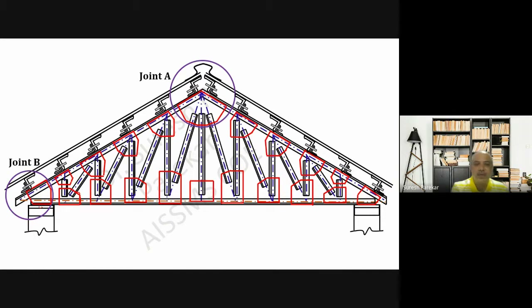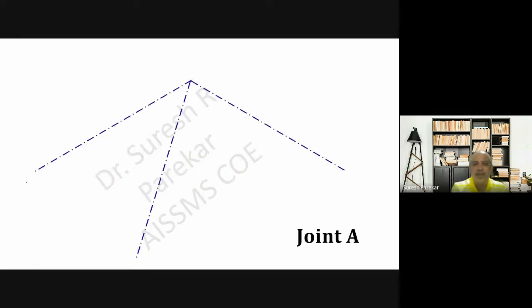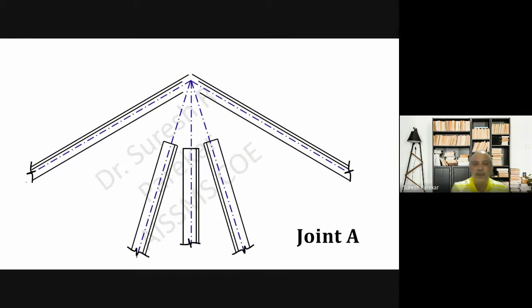Now we have to show Joint A — also called Ridge Joint — then Joint B, which is at the support and called the U-Joint. We also need Section 1-1 for the top chord member and Section 2-2 for the bottom chord member. These joints are plotted in the second part of the sheet. Again, we first plot the centroid, then the top chord member, then the bottom chord member, then the gusset plate — which is perpendicular to the member. For bolts, four are used for top chord members and two for other members, as already seen in the design.